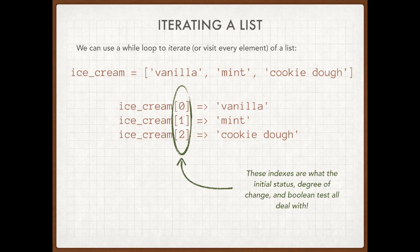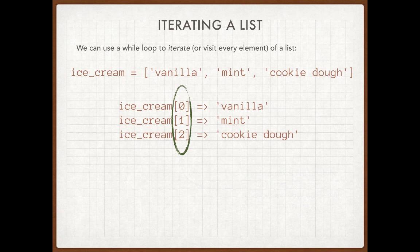Why? Because this is the fundamental property of a list — we all know it starts with zero and goes up by one. If I want to start at the beginning of a list, we know that lists always start with zero. So in my loop, my initial status will have something to do with index equals zero, because that's where the list starts.